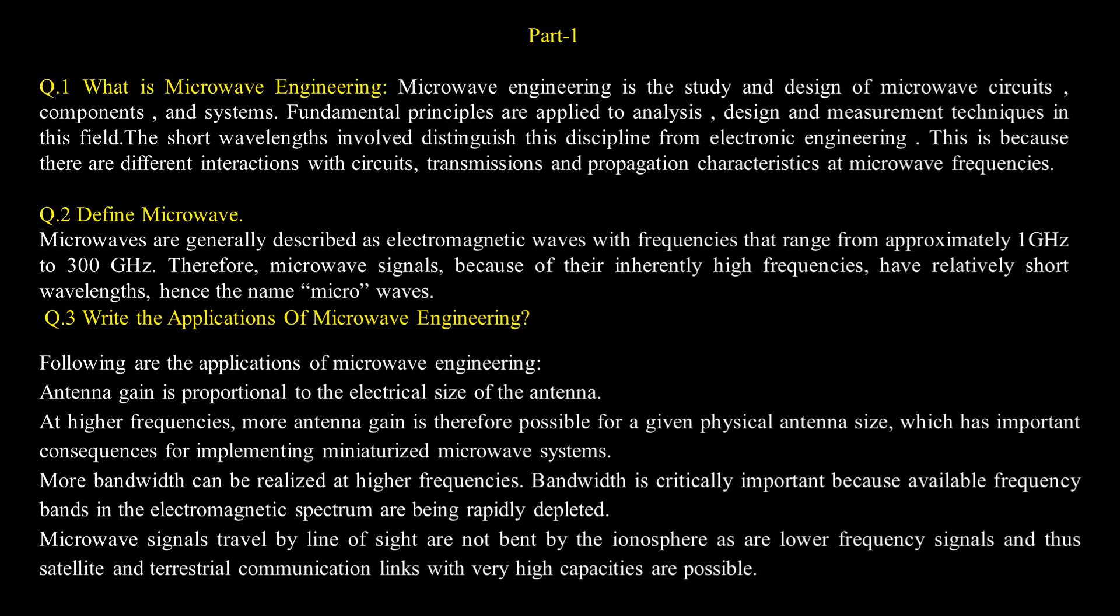Next question is define microwave. Microwaves are generally described as electromagnetic waves with frequencies that range from approximately 1 GHz to 300 GHz. Therefore, microwave signals, because of their inherently high frequencies, have relatively short wavelengths, hence the name microwave.